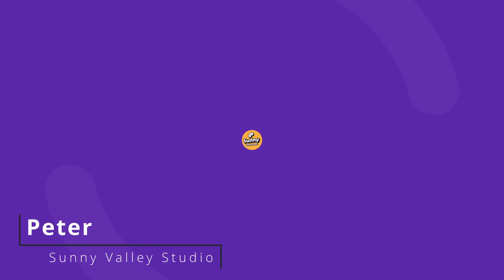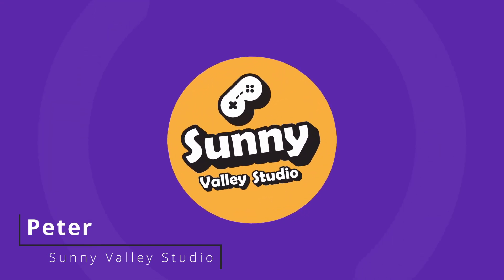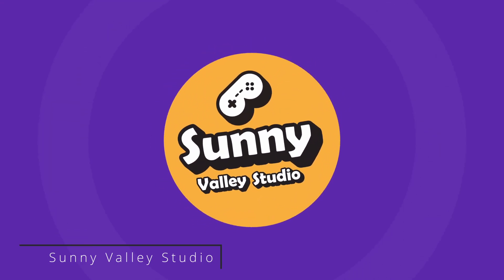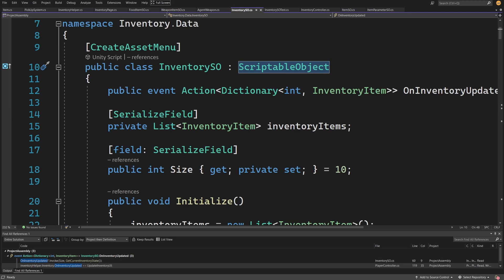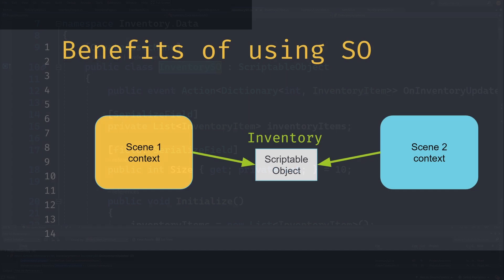Hi, I'm Peter and welcome to Sunny Valley Studio tutorials. As I mentioned, we will use scriptable objects to create our inventory system data structure. This should allow us to persist our inventory system data between different scenes, as long as each scene contains a reference to our inventory scriptable object.